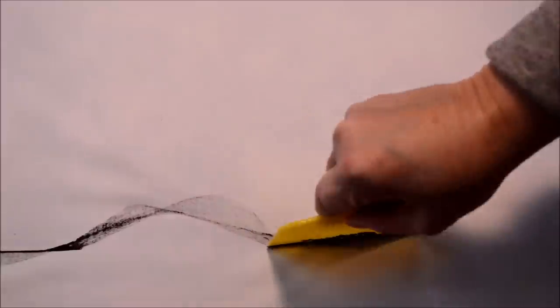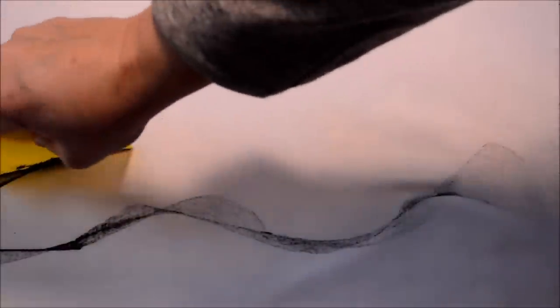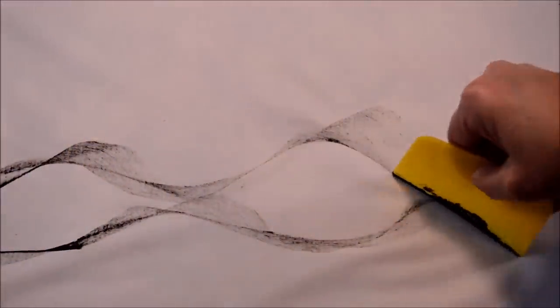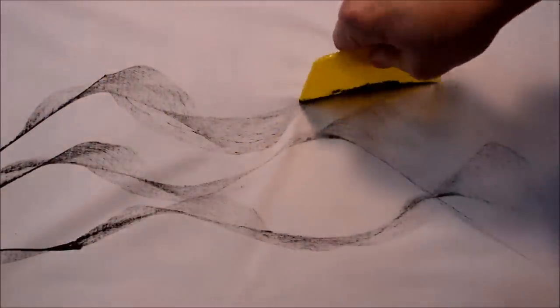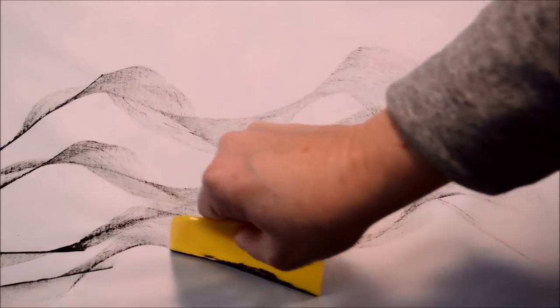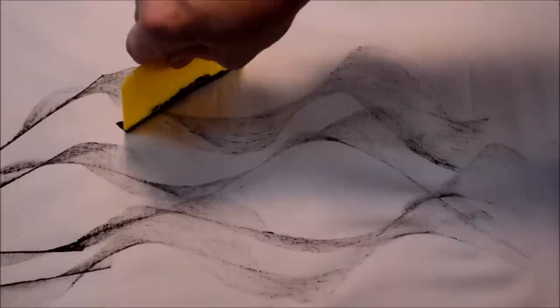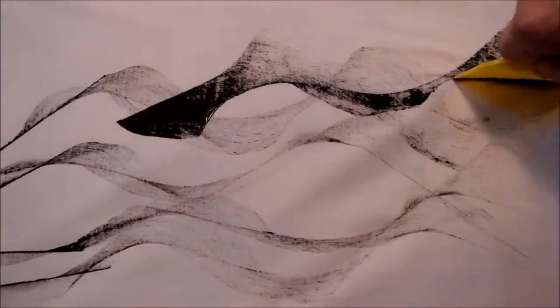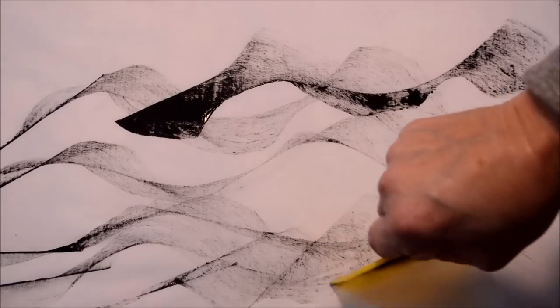Now another way of working might be to use the edge of your scraper and help it to do curves by bending and moving the piece, the scraper, across the surface of the fabric and creating some really lots of movement in here and getting some areas that are stronger and some that are much lighter.